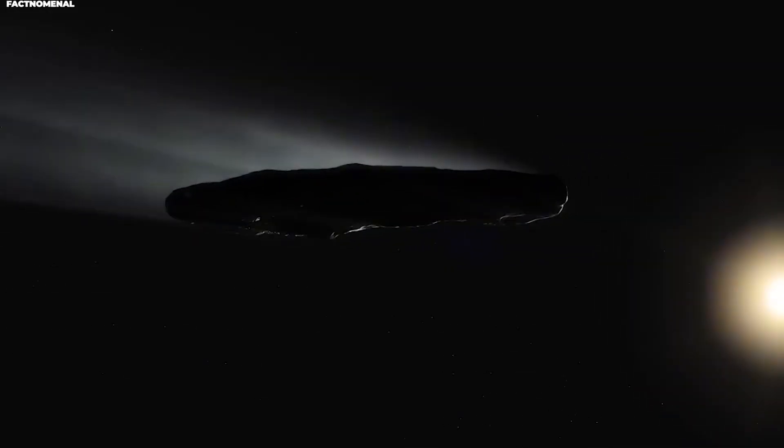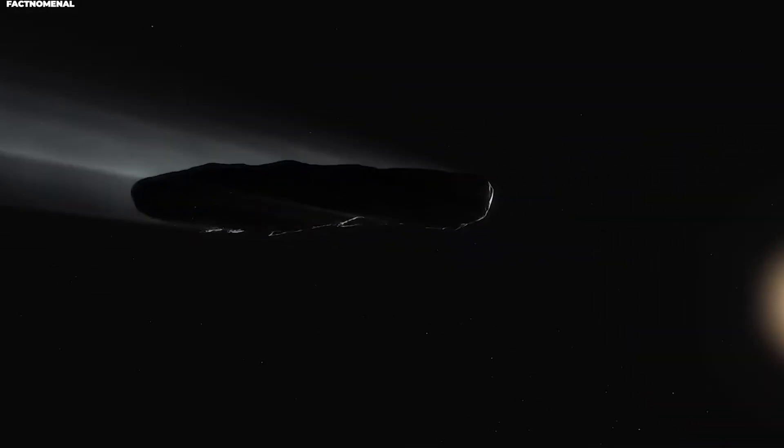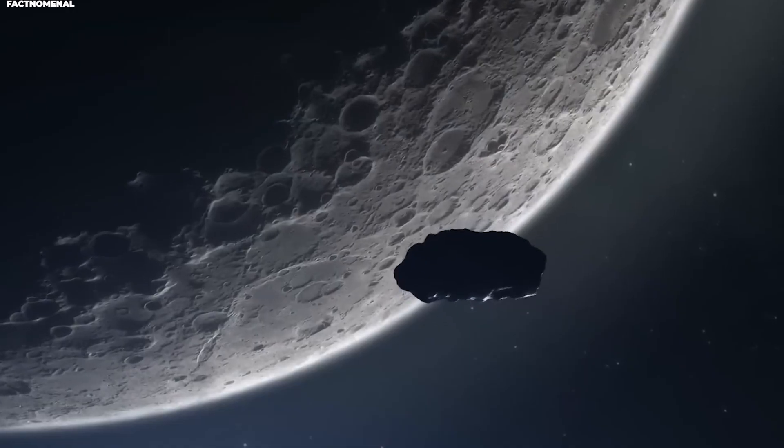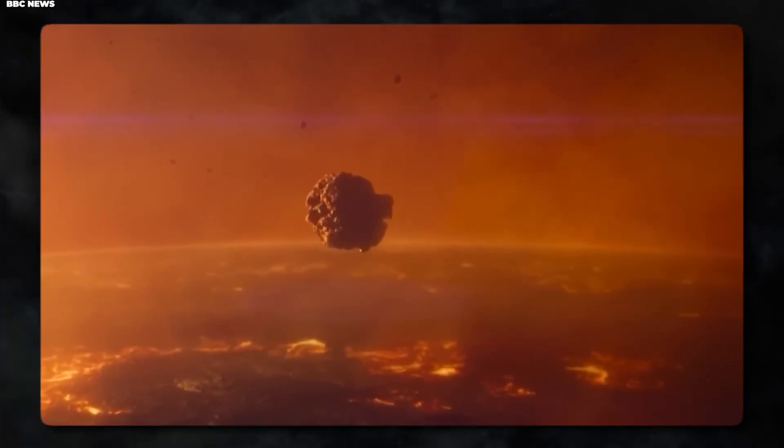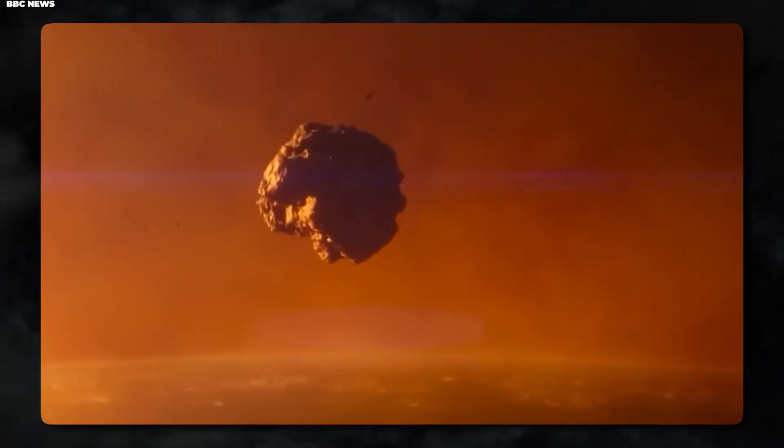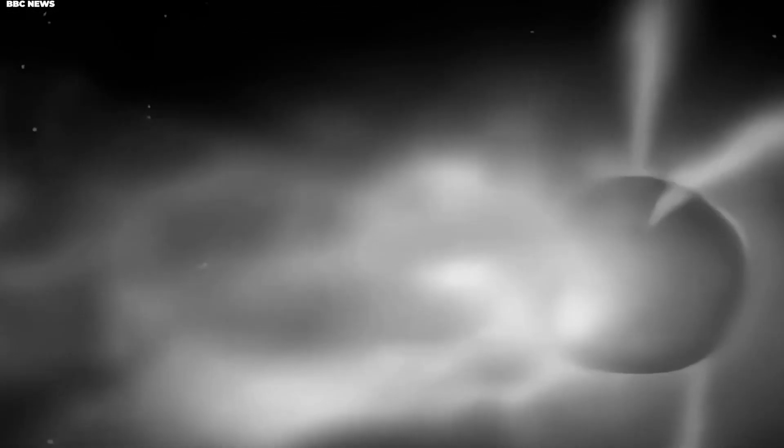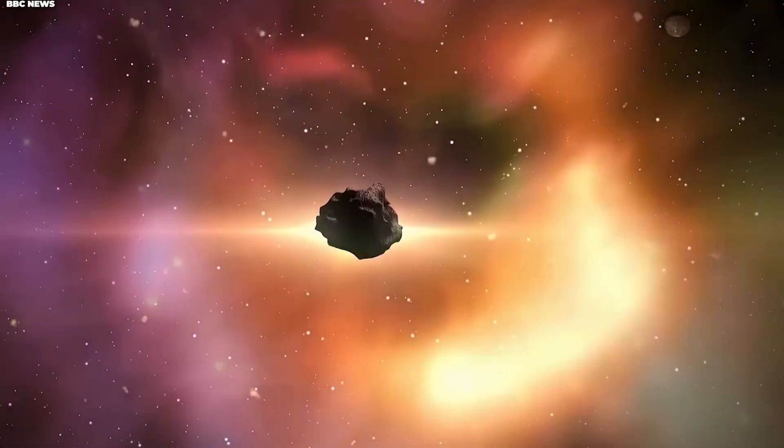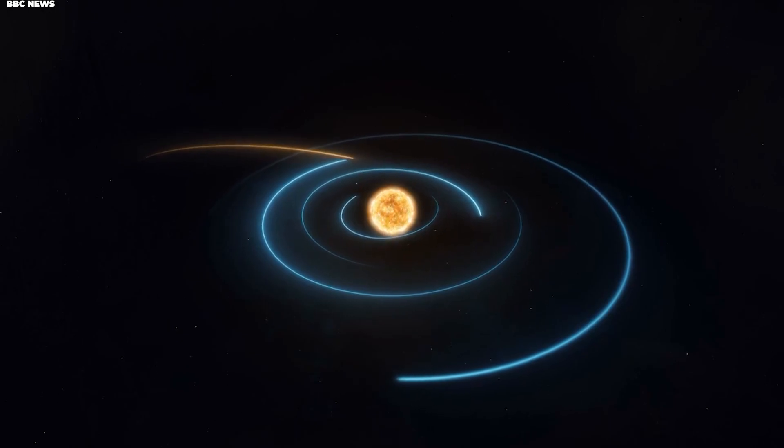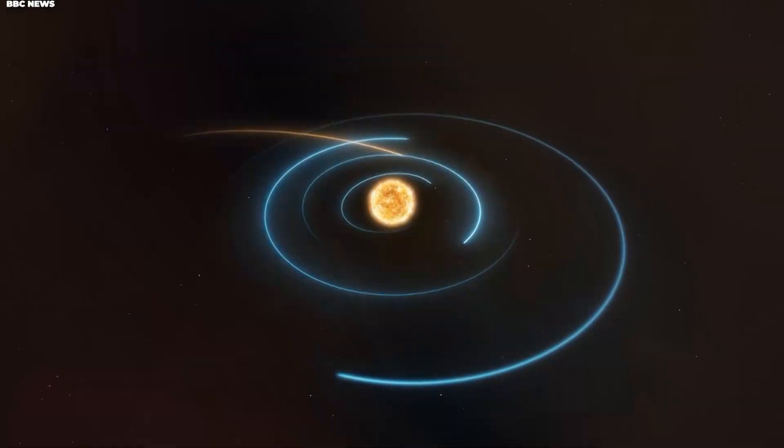Then something unexpected happened. In late September 2024, as 3i-ATLAS approached the sun, observers noticed the comet was beginning to fragment. This is not entirely unusual for comets, especially those making close approaches to the sun. The intense heat and gravitational stress can literally tear a comet apart. But this was not what scientists had hoped for.